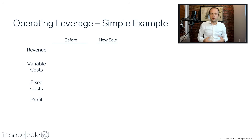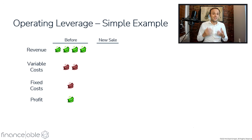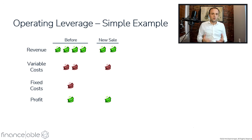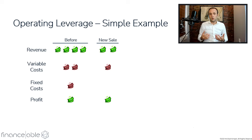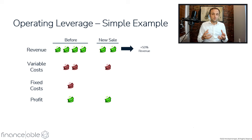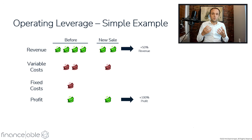So let's look at a very simple example of operating leverage in action. Imagine we have a business that has $4 of revenue, $2 of variable cost, $1 of fixed cost, and thus $1 of profit — so $4 of revenue, $3 of cost, $1 of profit. Now let's imagine the company makes an additional sale for $2. It has $1 of variable cost attached to that, but we have no incremental fixed costs because those costs by definition are fixed. As a result, this incremental $2 in revenue generates a full dollar in profit. Revenue increased by 50%, but our profit increased by 100% — that's operating leverage in action. What we're seeing is the increase in profit was far greater than the increase in revenue due to the degree of fixed cost in the cost structure.